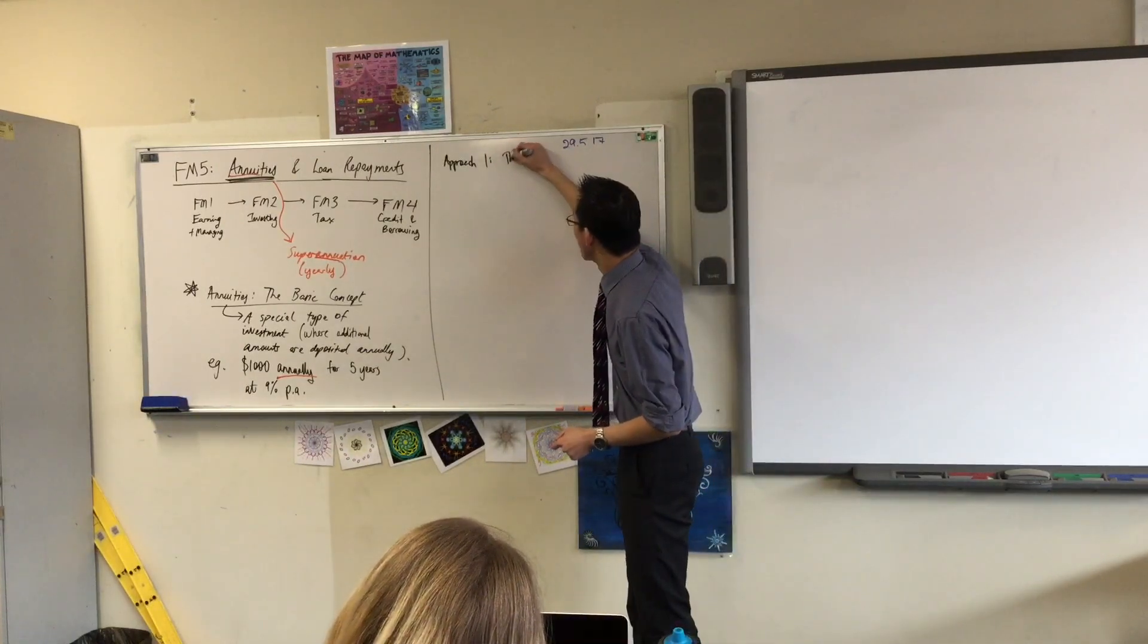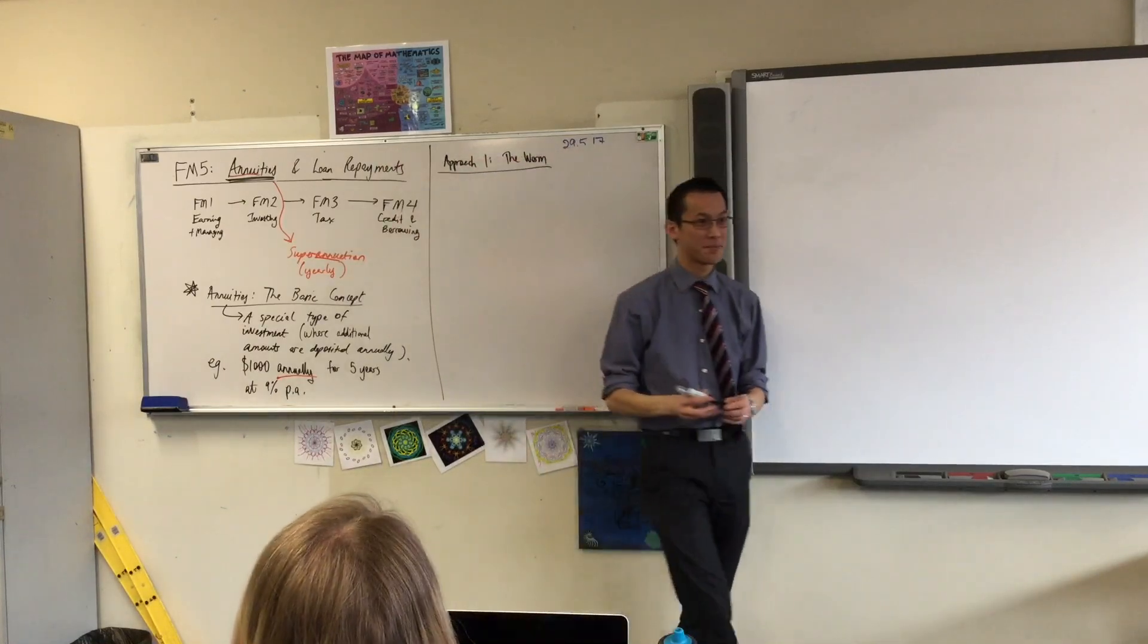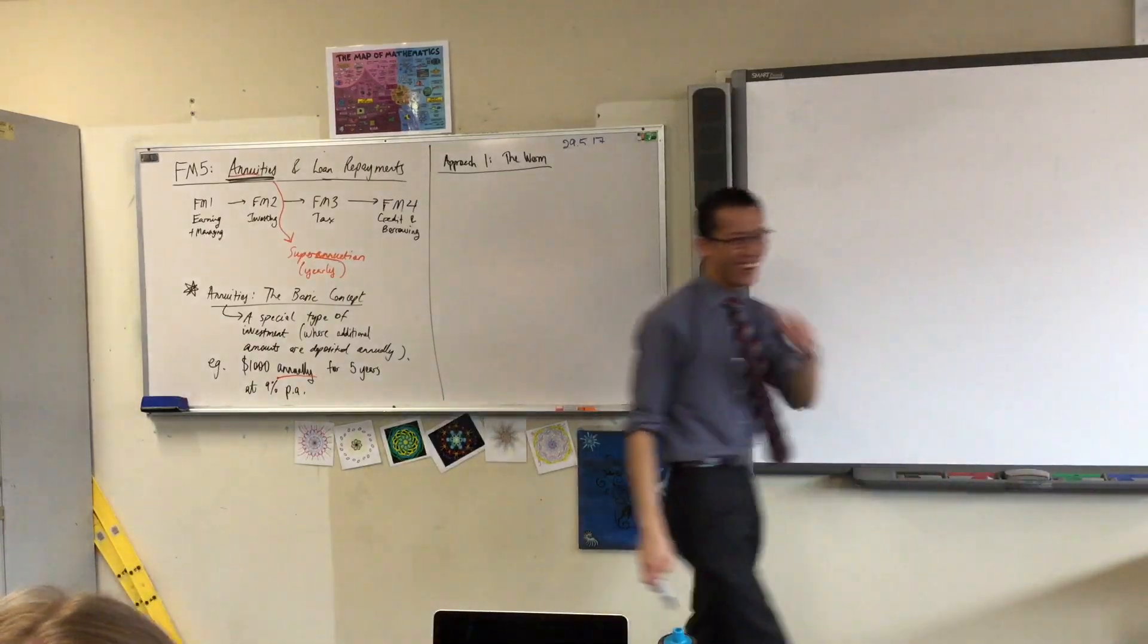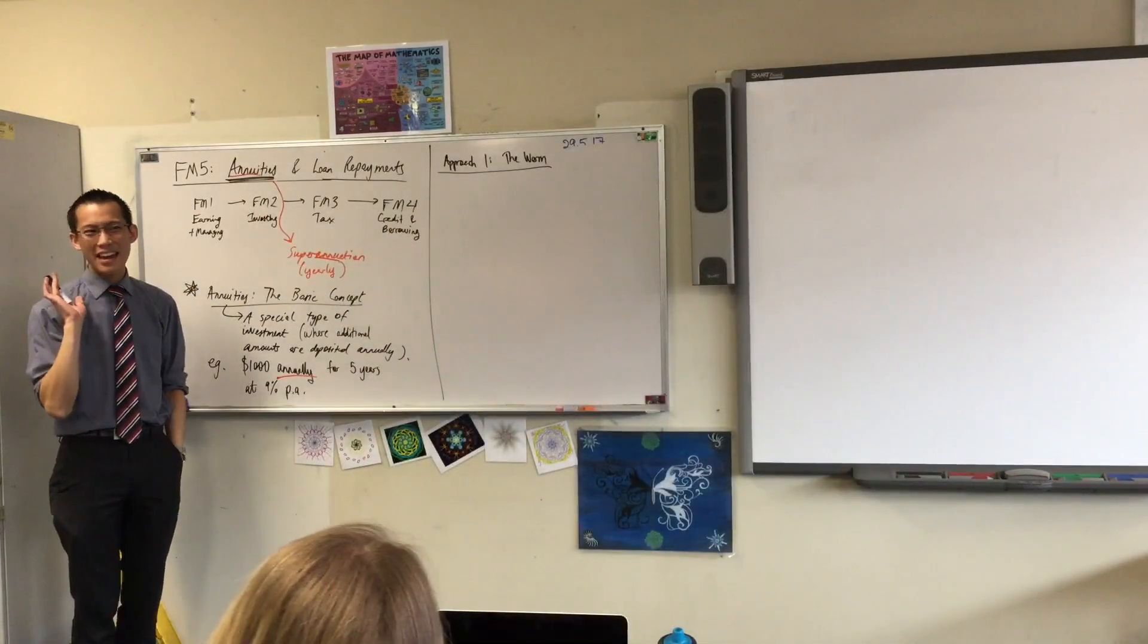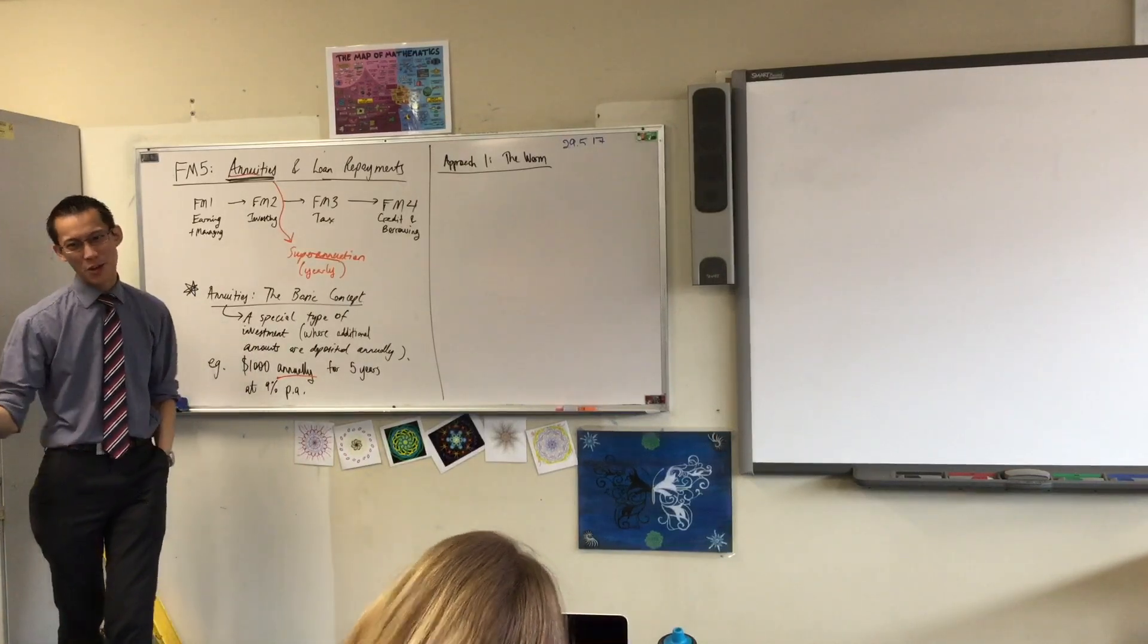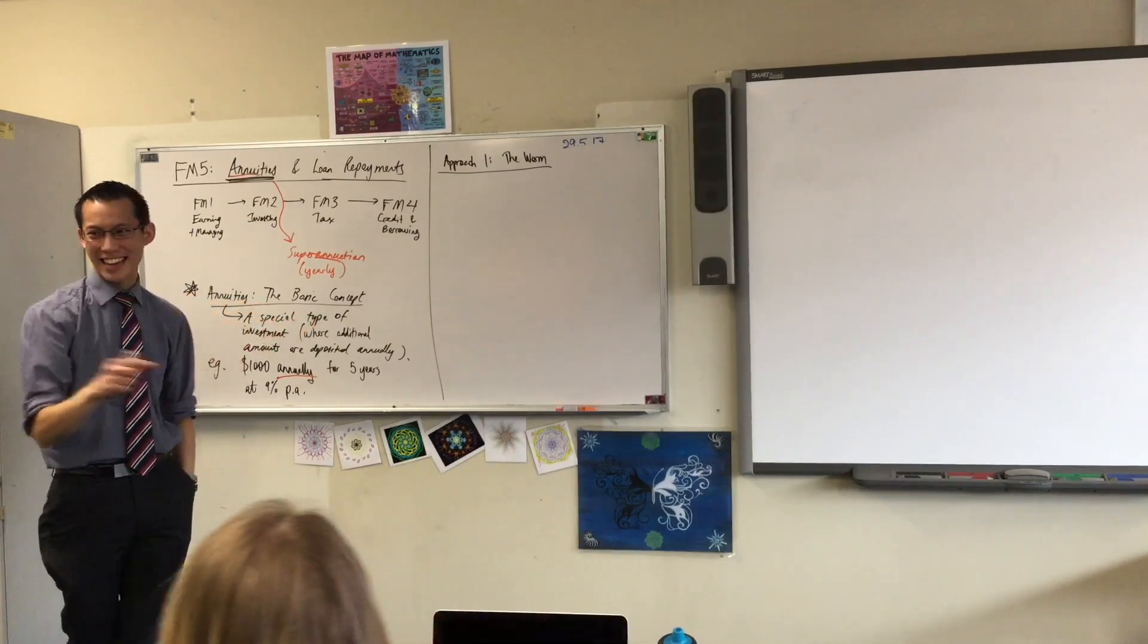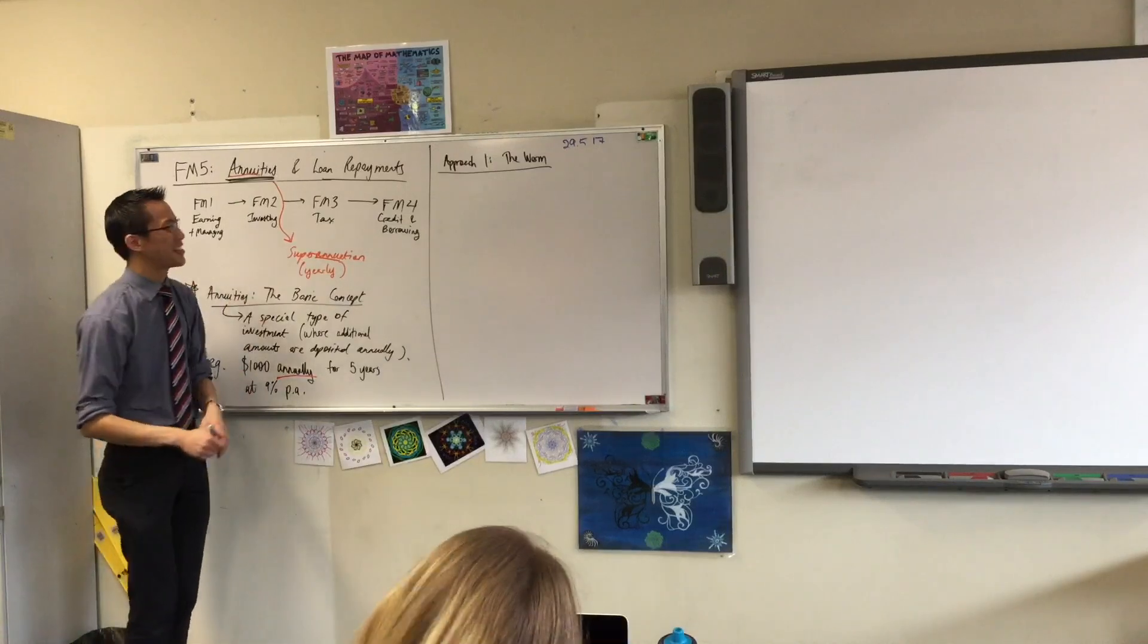Approach one is the worm. You'll see why I name it the worm in a second. So here's the way the worm approaches this. How does a worm move? Very slowly, and it crawls along the ground. So here's where we're going to set this out.